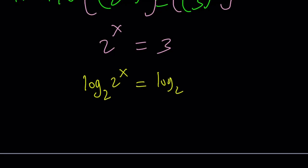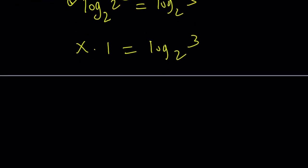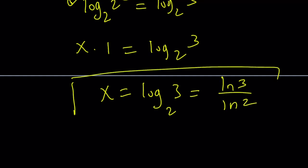And we're going to get the answer. By moving the x to the front, we get x times log base 2 of 2, which is 1, equals log base 2 of 3. So that should be the answer, right? But, obviously, by using change of base, we can also write it as ln 3 over ln 2.